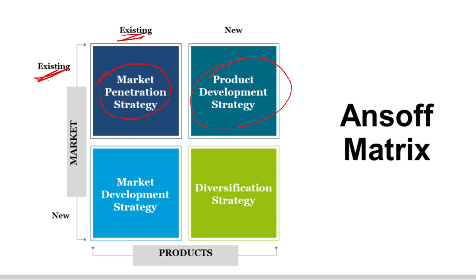For example, Nestle has Maggi noodles. Under the brand name Maggi, they came out with various kinds of sauces and ketchups — that is a product development strategy. In the same market, they brought a new product without spending much money on marketing because people already knew the Maggi brand. What is market development strategy?